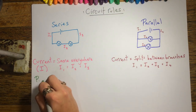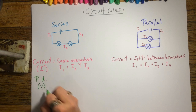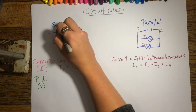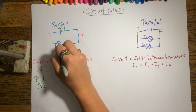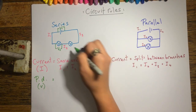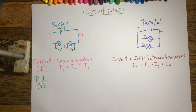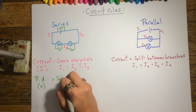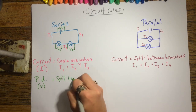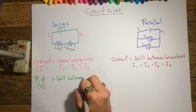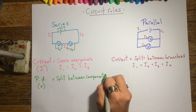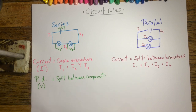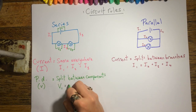With potential difference, we once again need to consider the path of the charges as they go around the circuit. In a series circuit, each charge is going to pass through all the components. Therefore, the potential difference is shared between the components, and if we add up the potential difference across each component, it will equal the battery voltage.